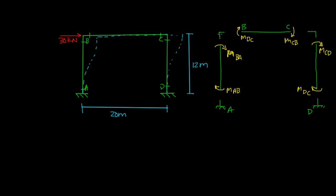At the joints, the moments are equal and opposite. There's also the 30 kN load at joint B. At joint B, M_BC is clockwise on the member, so that means it's counterclockwise on the joint. Same thing for M_BA — clockwise on the member, counterclockwise on the joint. At joint C, M_CB is clockwise, so counterclockwise on the joint; and M_CD clockwise means counterclockwise on the joint — equal and opposite.